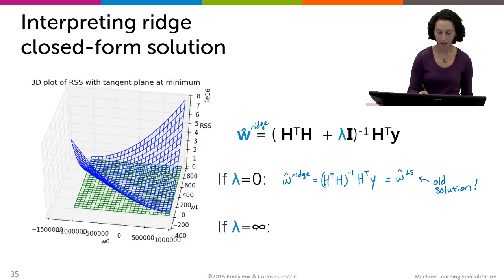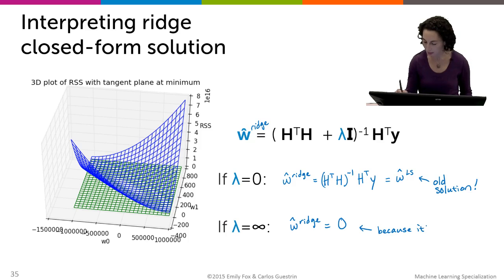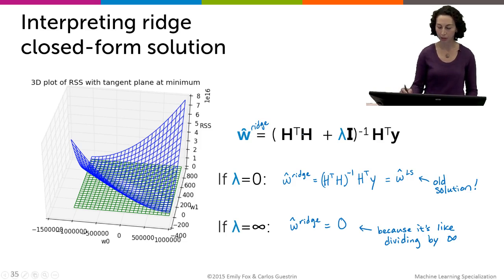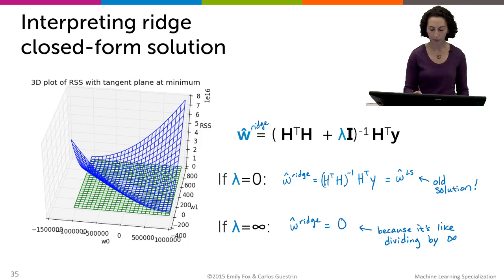And what if I set lambda all the way to infinity? Well, then I get w hat ridge equals zero because it's like dividing by infinity when we have this infinity appearing in this inverse. Remember the inverse was like our matrix analog of division. So that's the intuition for why w hat ridge is exactly equal to zero.